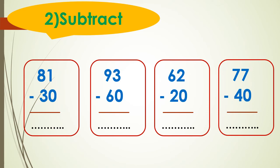Question number 2: we have 81 minus 30. First, write ones and tens. Start subtracting by ones: 1 minus 0 equals 1. So I write 1 in the ones place. Look at the tens: 8 minus 3 equals 5. So I write 5 in the tens place.